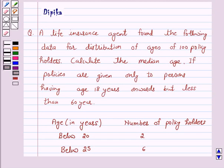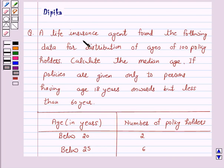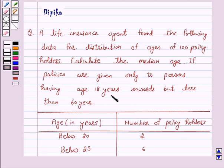Hello and welcome to the session. I am Deepika here. Let's discuss a question which says: a life insurance agent found the following data for distribution of ages of 100 policy holders. Calculate the median age if policies are given only to persons having age 18 years onwards but less than 60 years.